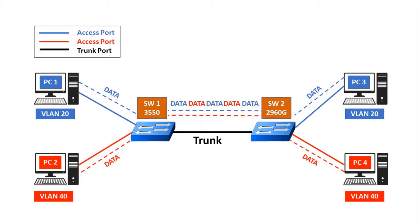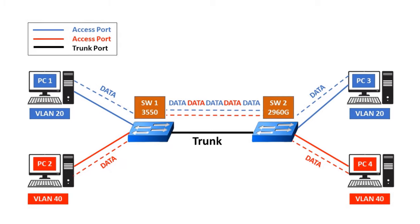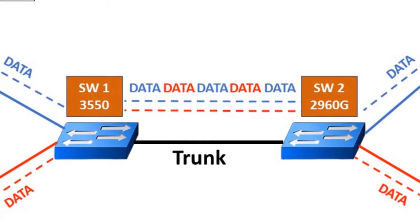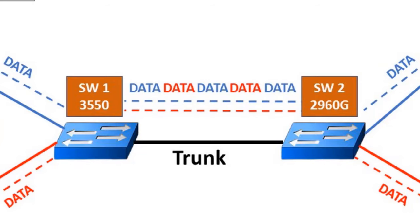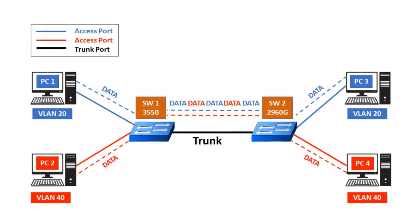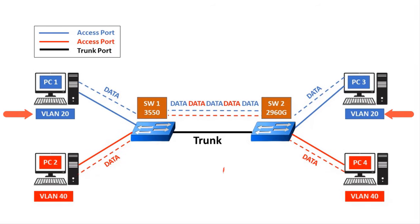This is my network topology diagram. Here you can see I have Switch 1, a 3550 switch, and Switch 2, a 2960 switch — both are 48-port switches. I will connect port 48 from the Cisco 3550 switch to port 48 on the Cisco 2960 switch and configure both ports as trunk ports, so VLAN 20 and VLAN 40 traffic can travel via the trunk link between both switches.